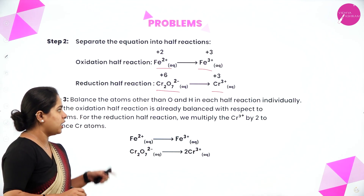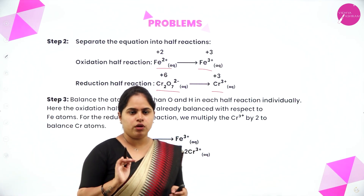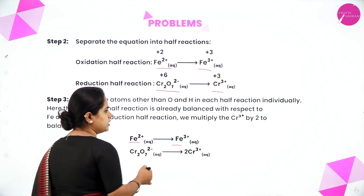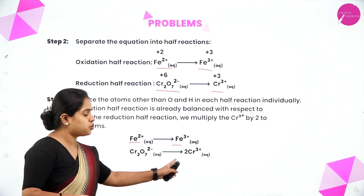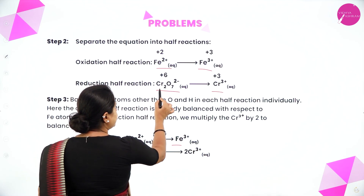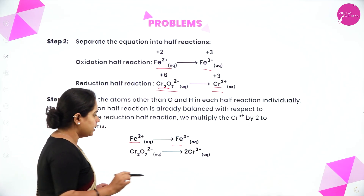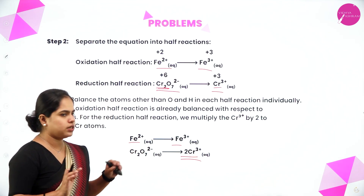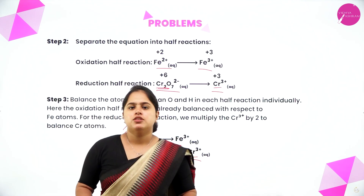Now balance the atoms other than oxygen and hydrogen in each half reaction individually. For the oxidation half reaction, Fe²⁺ to Fe³⁺: the number of iron atoms is the same on both sides, so nothing needs to be balanced. For the reduction half reaction, Cr₂O₇²⁻ to Cr³⁺: on the reactant side there are two atoms of chromium, but on the product side there is only one. So we multiply by 2, giving 2Cr³⁺. Now two chromium atoms on each side — balancing of atoms other than oxygen and hydrogen is done.